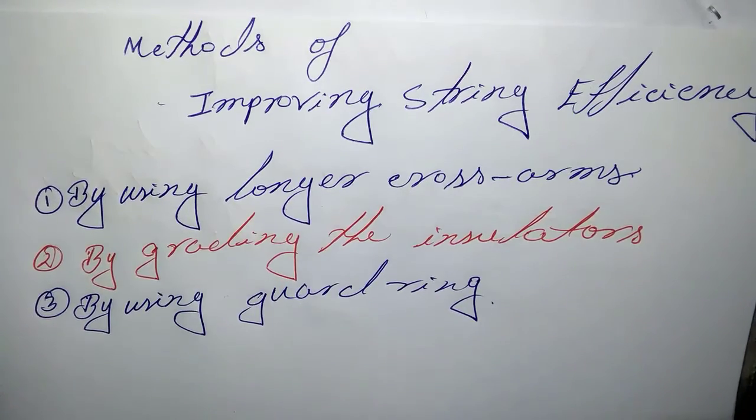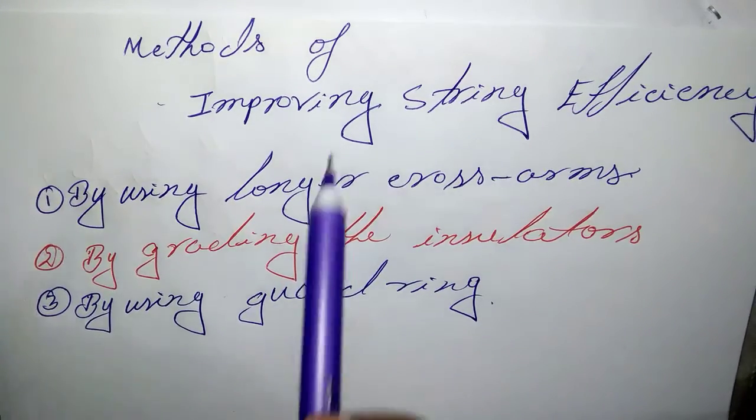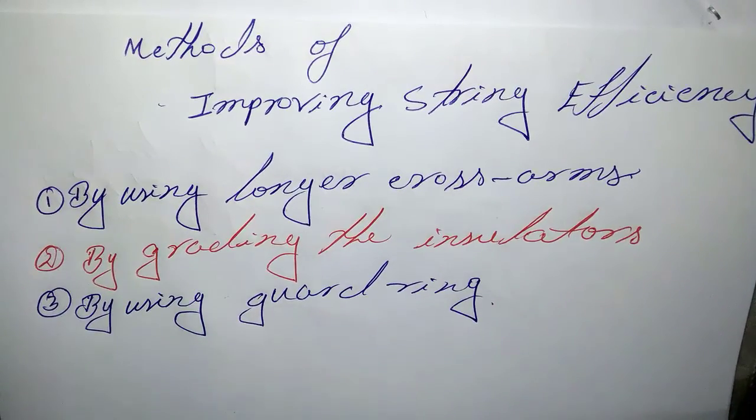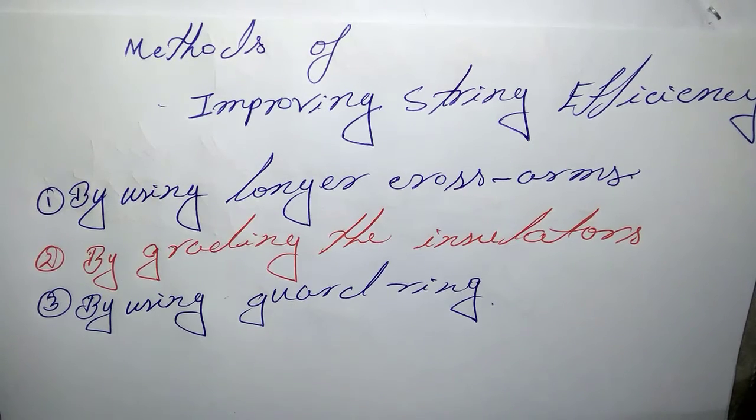Hello everyone, in this tutorial I'll discuss methods of improving string efficiency. It has been seen that the potential distribution in a string of suspension insulators is not uniform. The maximum voltage appears across the insulator nearest to the line conductor.